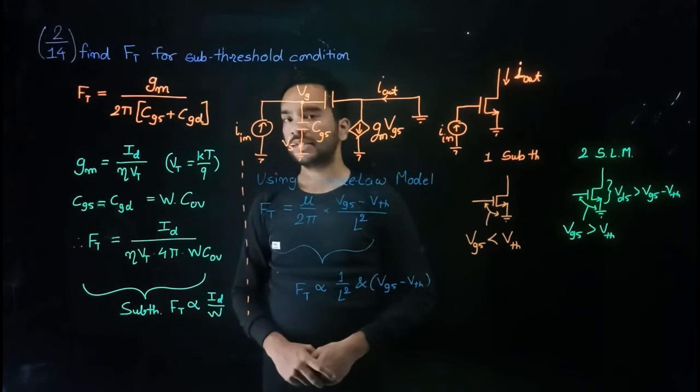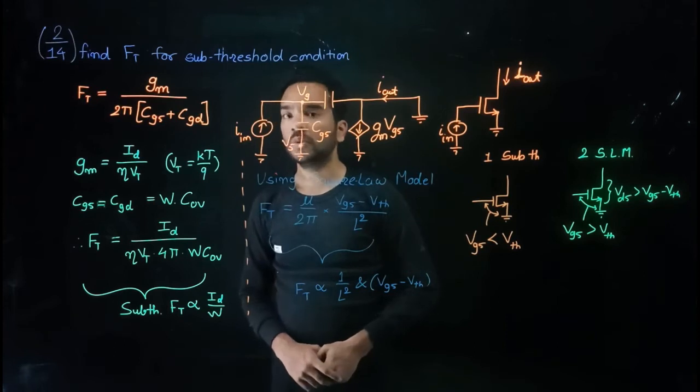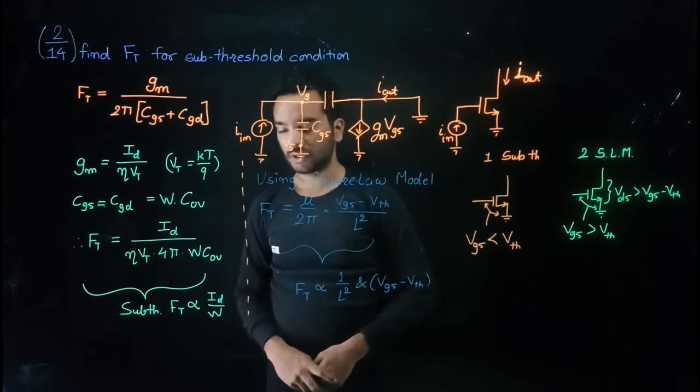So here important takeaway is Ft is proportional to id and Ft is proportional to 1 over width.